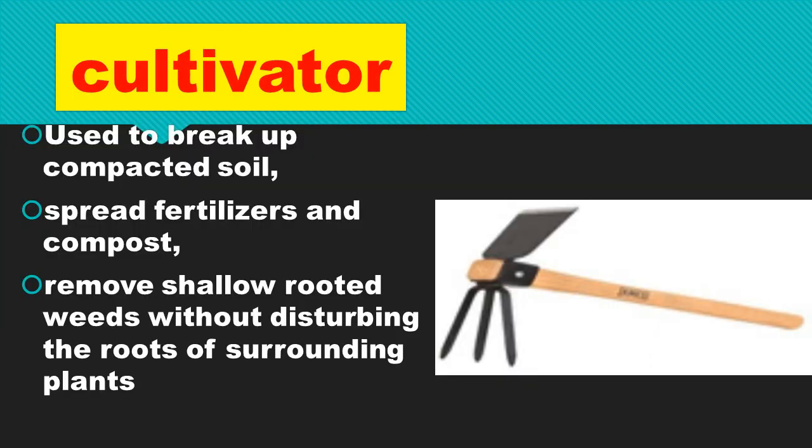The cultivator has one side like a hoe and the other side like a fork. It is used to break up compacted soil, spread fertilizer and compost, and remove shallow-rooted weeds without disturbing the roots of surrounding plants.